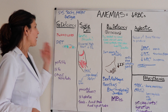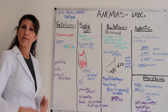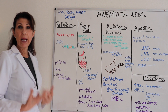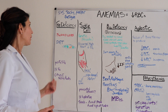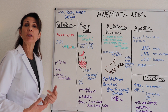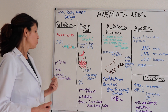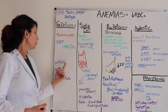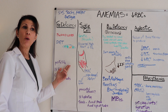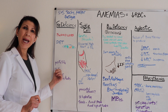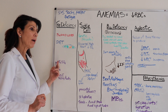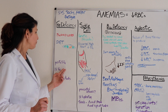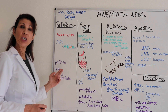Iron deficiency anemia is very common. People don't eat an adequate diet rich in iron, or blood loss from hemorrhage can cause iron deficiency. Blood transfusions may be warranted. Treatment includes iron supplementation — PO iron pills, which is a slower approach — as well as IV iron preparations.